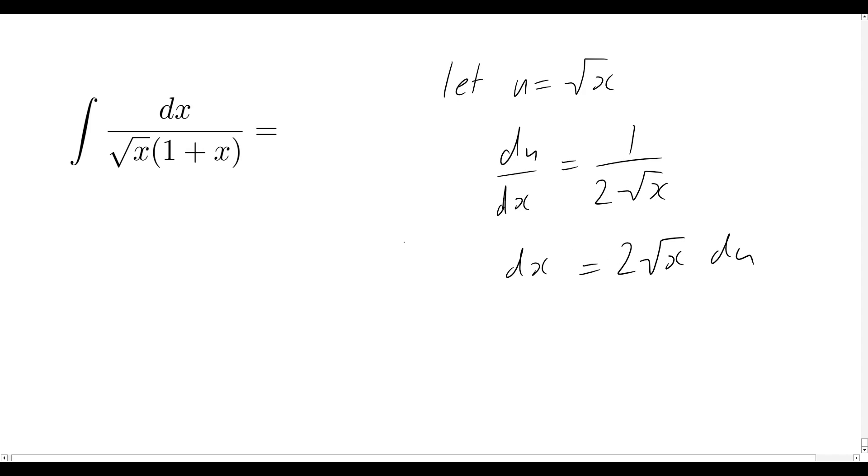So let's now rewrite our problem out using our u value here and our dx value here as well. And let's see what we get. So now it will be 1 over, well, square root of x. We've said that's going to be u. And then 1 plus x.